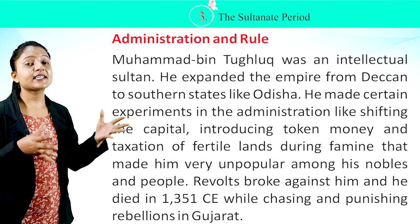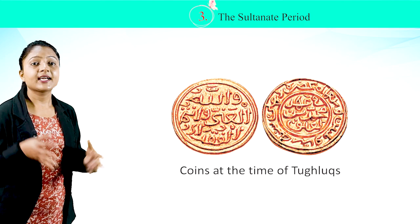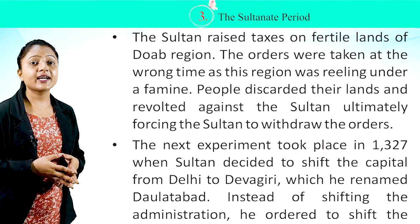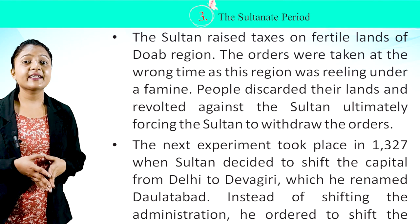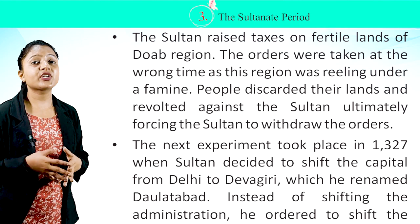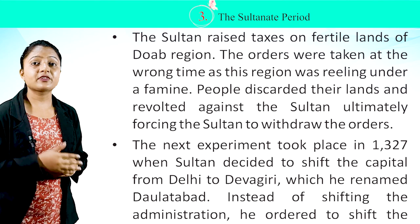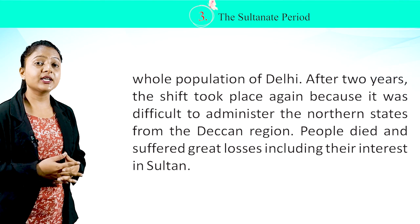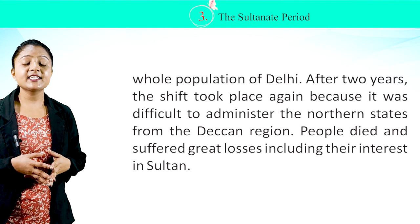Muhammad bin Tughlaq raised taxes on the fertile lands of the Doab region. The orders were given at the wrong time as the region was suffering from famine. People abandoned their lands and revolted, ultimately forcing the Sultan to withdraw the orders. In 1327, the Sultan decided to shift the capital from Delhi to Devgiri, which he renamed Daulatabad. Instead of shifting only the administration, he ordered the entire population of Delhi to relocate. After two years, the shift was reversed because it was difficult to administer the northern states from the Deccan region.